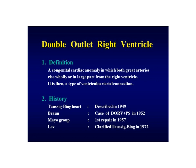The definition is a congenital cardiac anomaly in which both great arteries arise wholly or in large part from the right ventricle. It is then a type of ventriculo-arterial connection. Drs. Taussig and Bing were both pioneers in pediatric cardiology — their names appear across many different surgical procedures and descriptions that they pioneered in the field of congenital heart defects.